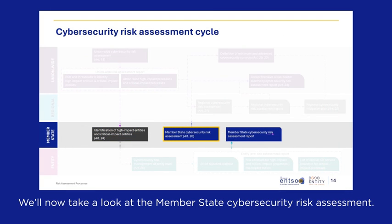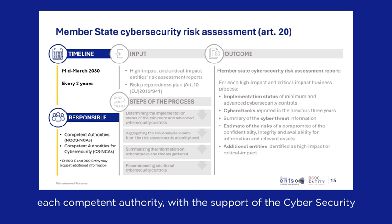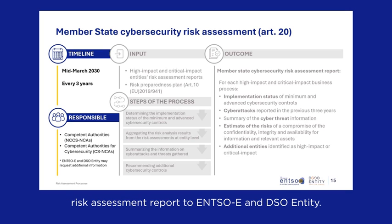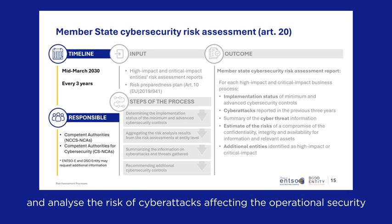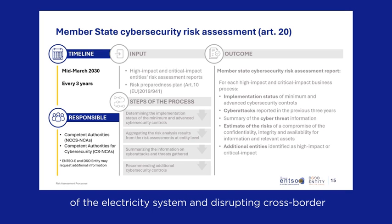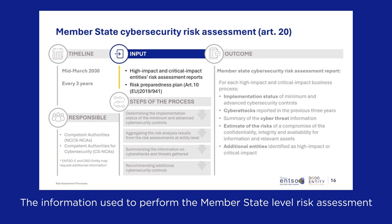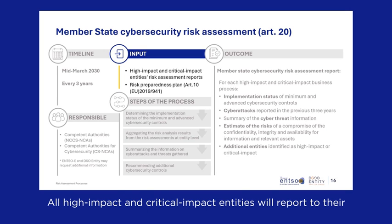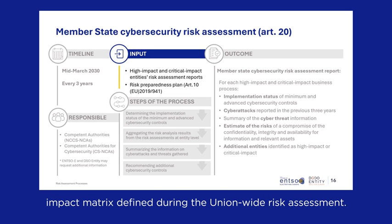We'll now take a look at the member state cybersecurity risk assessment. By mid-March 2030, and every three years after that, each competent authority, with the support of the Cybersecurity Incident Response Team, will submit a member state cybersecurity risk assessment report to ENTSOE and DSO Entity. The goal is to identify and analyze the risk of cyberattacks affecting the operational security of the electricity system and disrupting cross-border electricity flows in one member state. The information used is taken from entity-level cybersecurity risk assessments, with all high-impact and critical impact entities reporting identified risks using the same risk-impact matrix defined during the union-wide risk assessment.